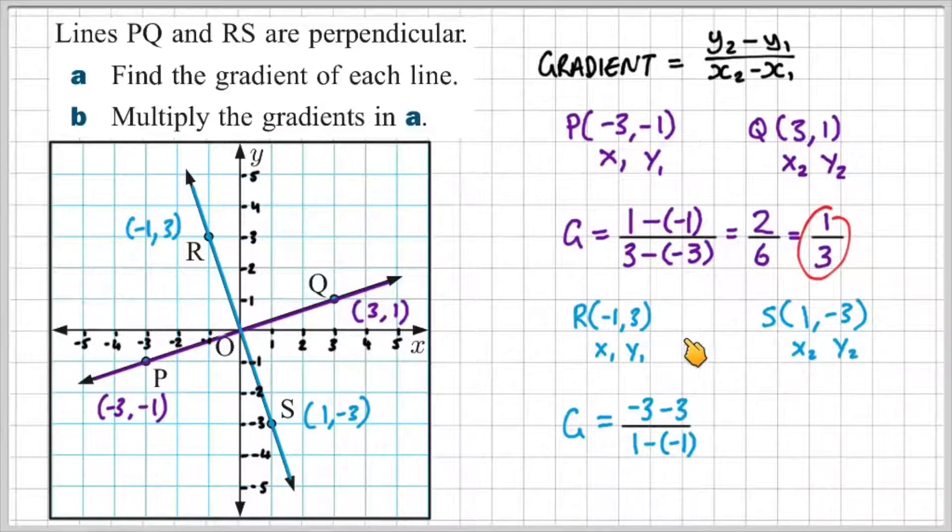So minus three minus three, and then one minus a negative one, which will give me minus six over two, which is simplified down to minus three. So that's the gradient of line RS.